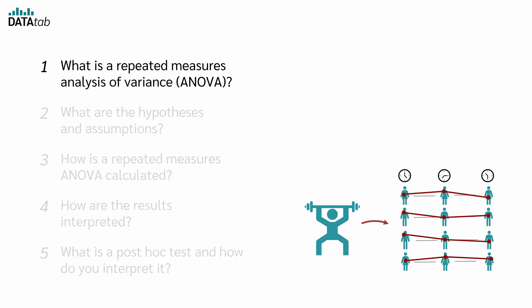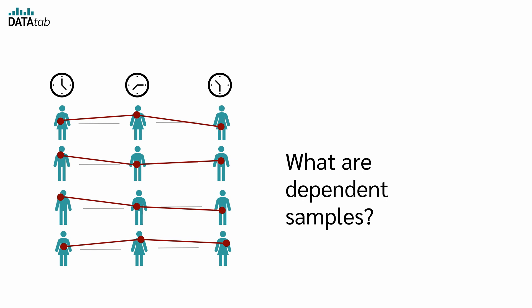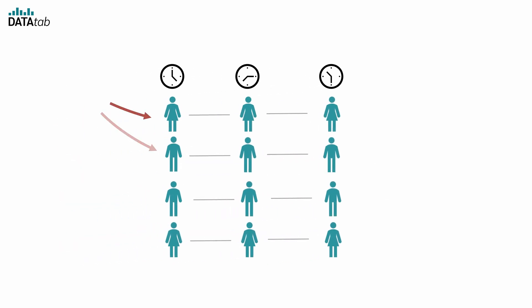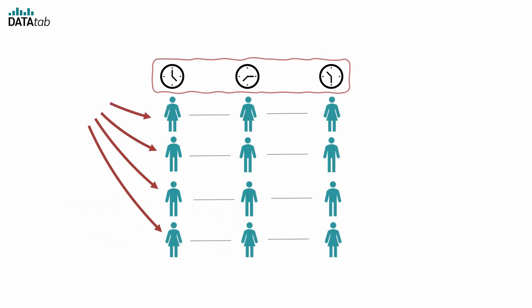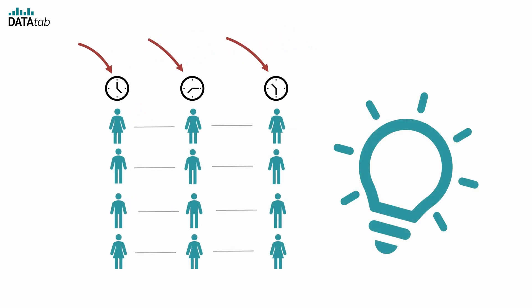Let's start with the first question: What is a repeated measures ANOVA? A repeated measures analysis of variance tests whether there is a statistically significant difference between three or more dependent samples. In a dependent sample, the same participants are measured multiple times under different conditions or at different time points. We therefore have several measurements from each person involved.